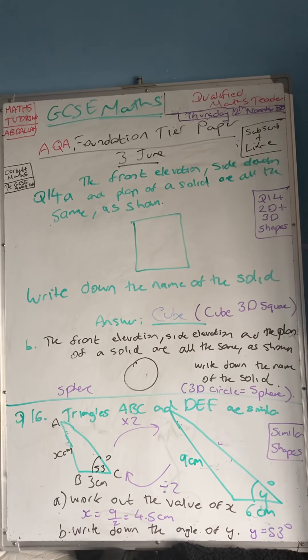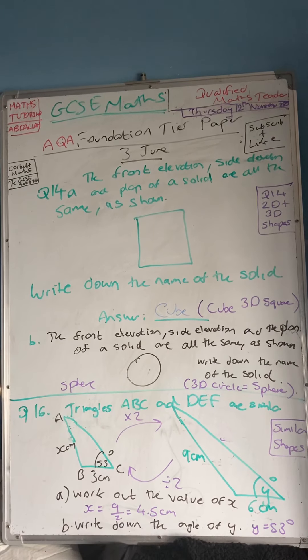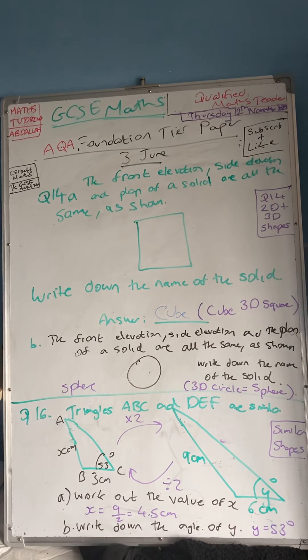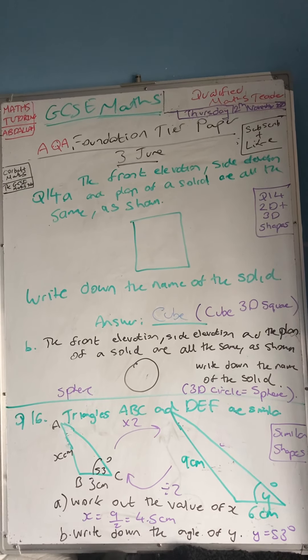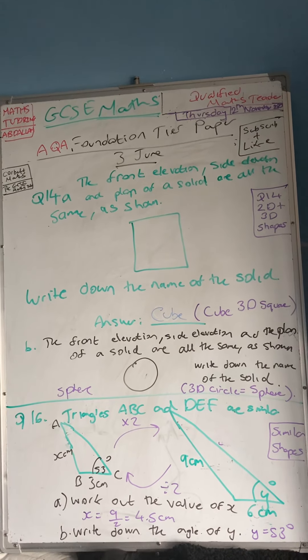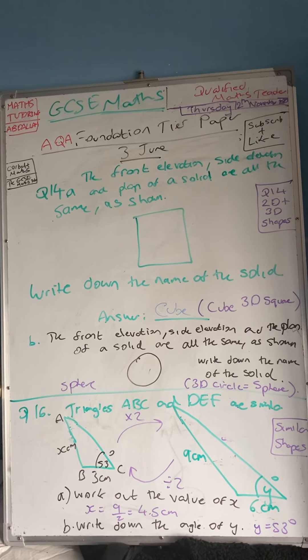So that is like a little golden rule. They put that in there to throw you off. Some of you might have put half of 53, but that would be incorrect. The angles never, ever, ever change for similar shapes. The angles always remain the same.